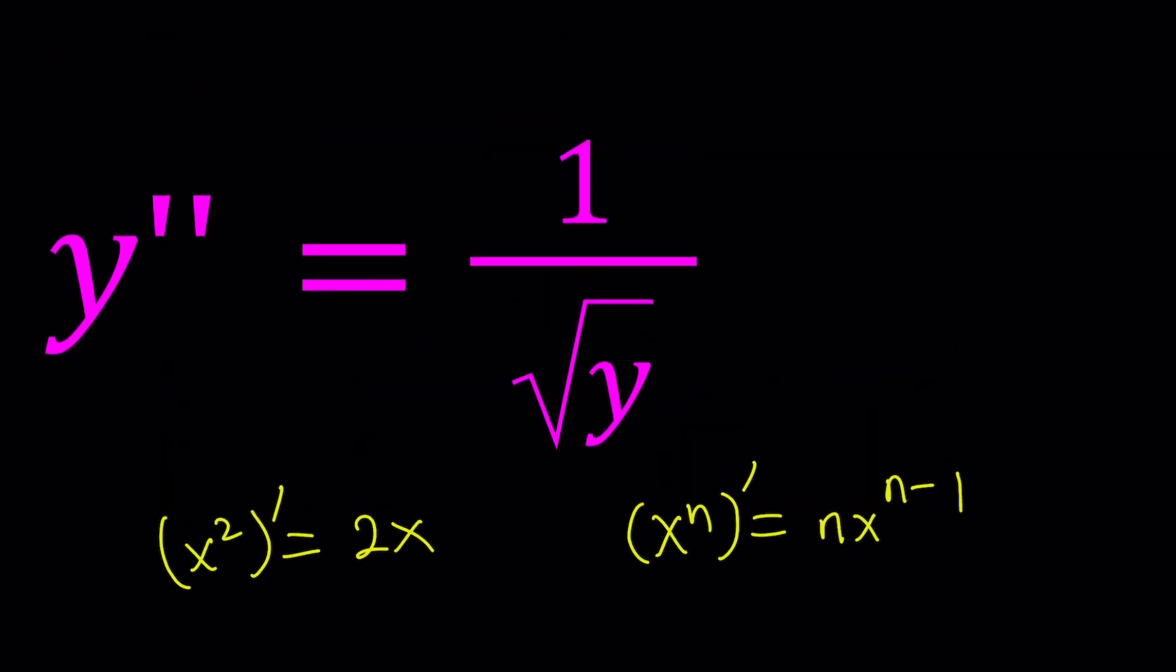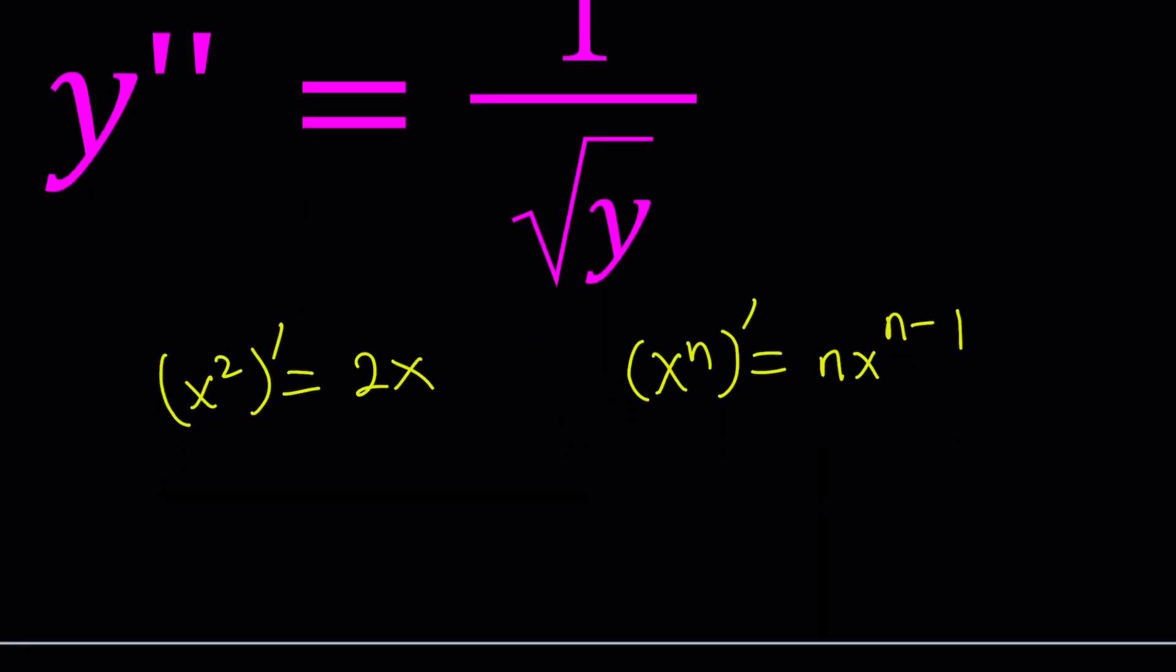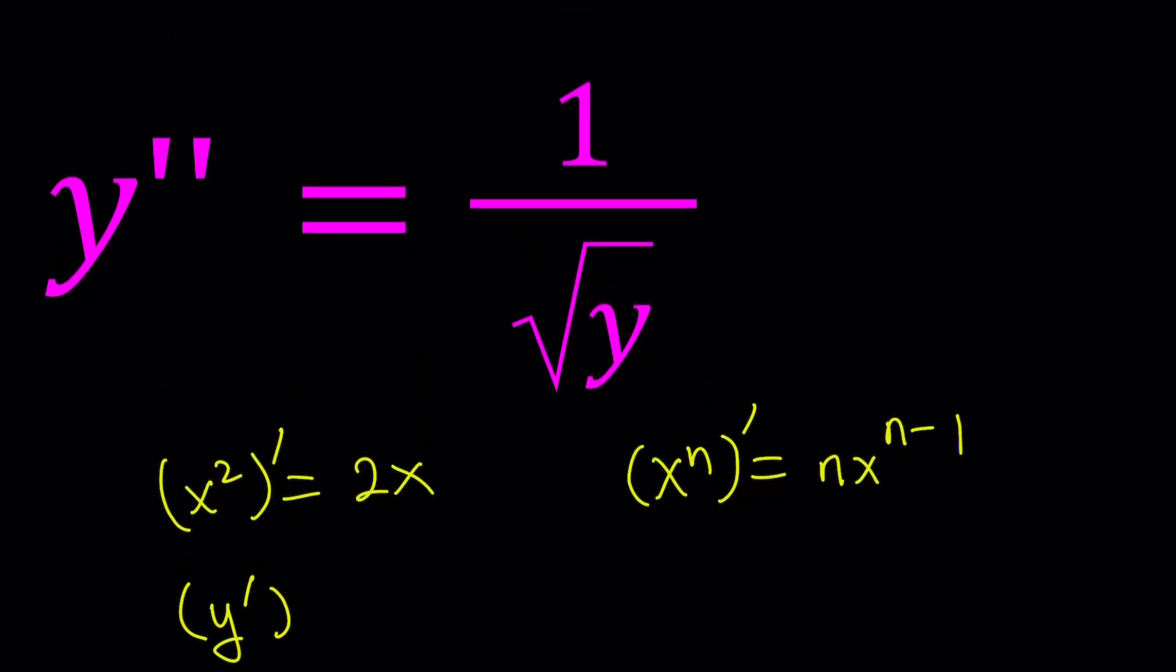If you have x to the n, it becomes n times x to the power n minus 1, in general. Now, how can I use this information? So if you differentiate x squared, you notice you get 2x. But I want to multiply both sides by something. And I have the second derivative. So, I kind of want to start with the power of the first derivative. So, here's what I'm going to do. I'm going to multiply both sides of this equation by y prime.